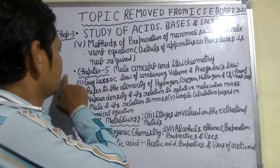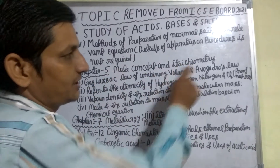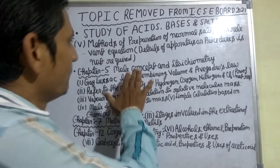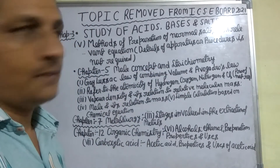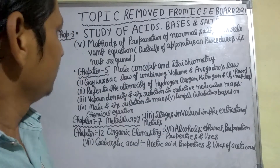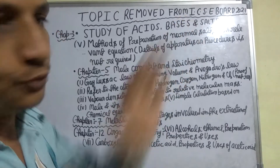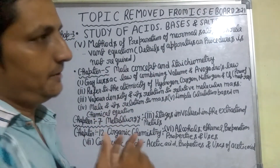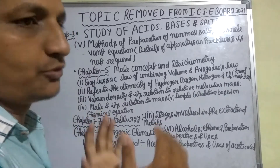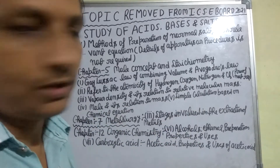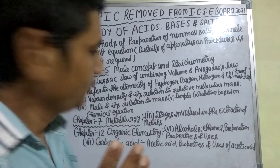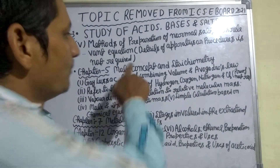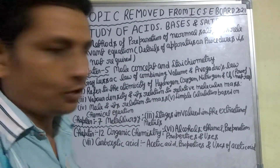Chapter 5: Mole Concept and Stoichiometry — one of the most important chapters in chemistry. Now in the year 2021, you have to study all topics except these removed ones. You have to study other topics given in your book, but remember that these 5 topics are removed from Mole Concept and Stoichiometry.